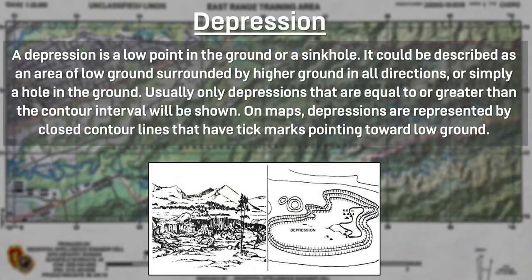A depression is a low point in the ground or a sinkhole — an area of low ground surrounded by higher ground in all directions, or simply a hole in the ground. Usually only depressions that are equal to or greater than the contour interval are shown. On maps, depressions are represented by closed contour lines that have tick marks pointing toward the low ground.